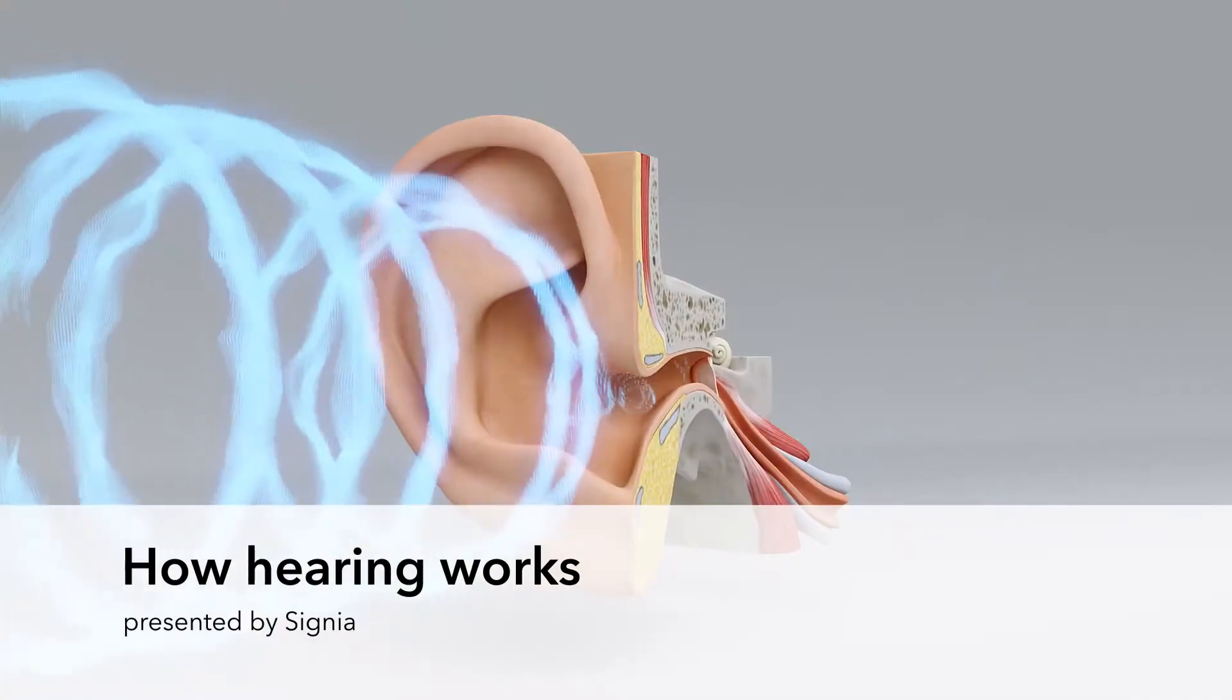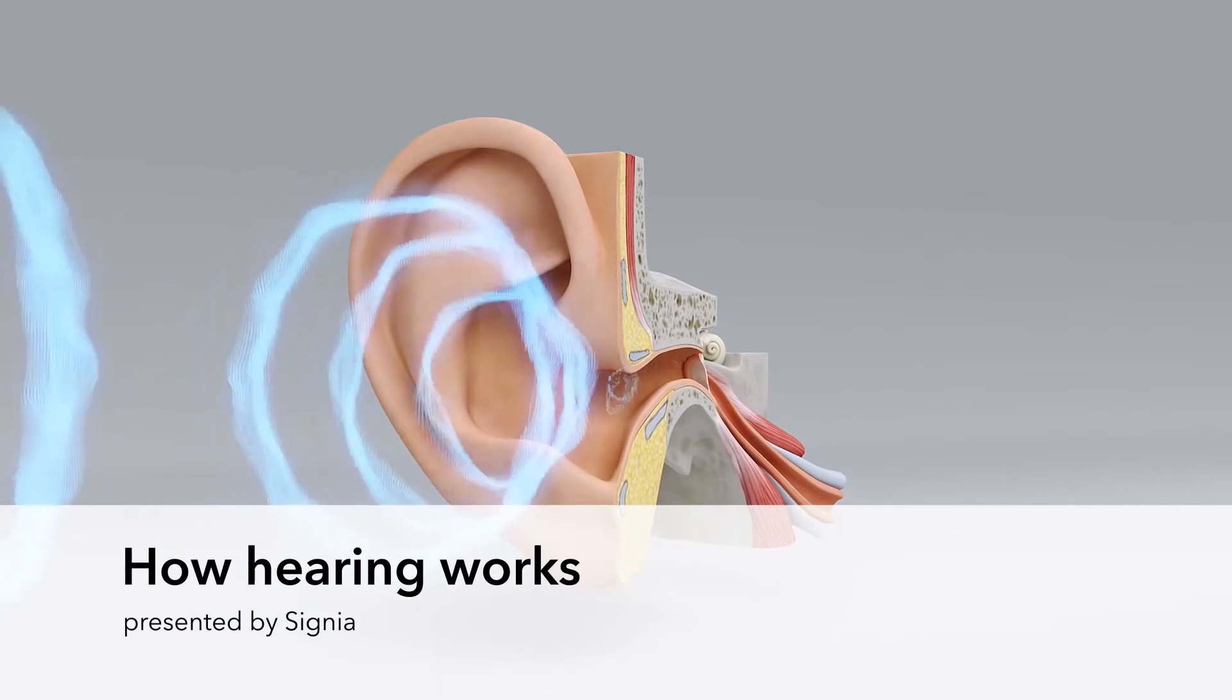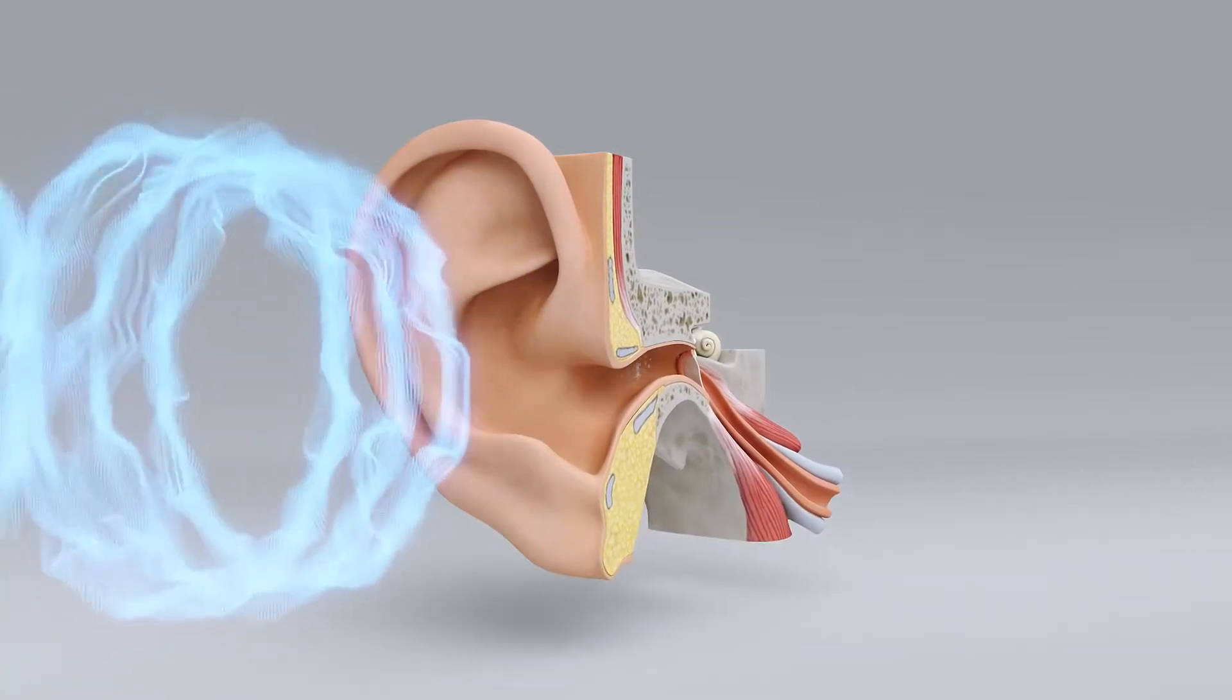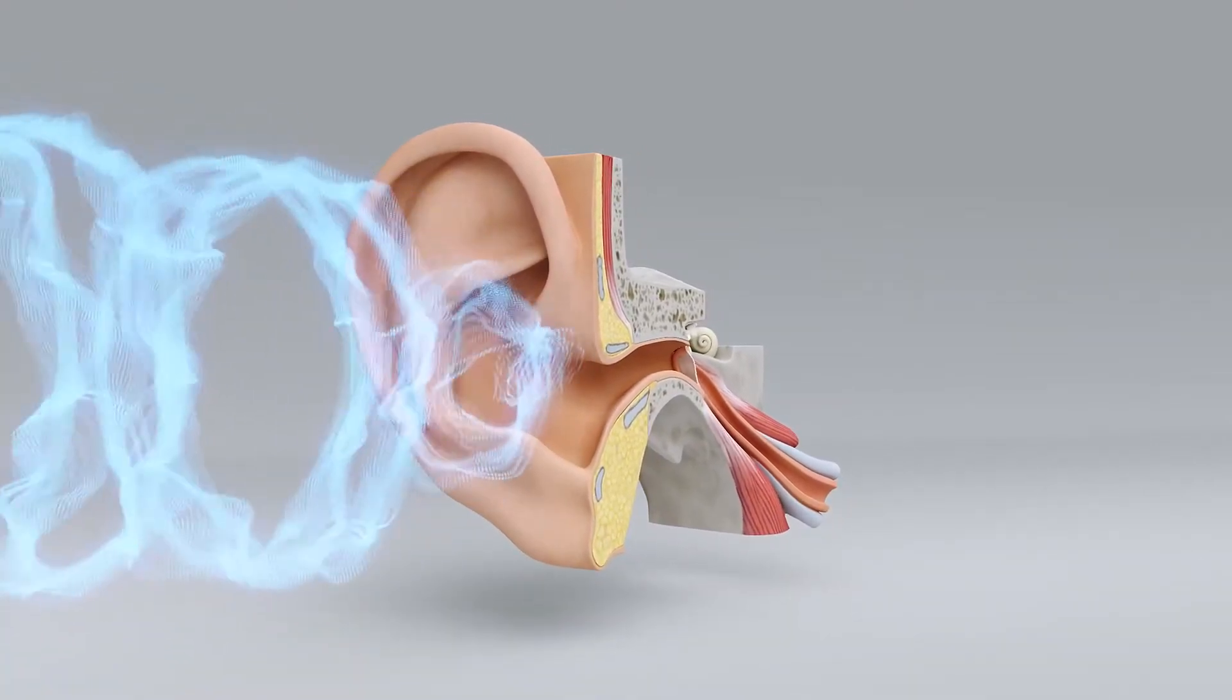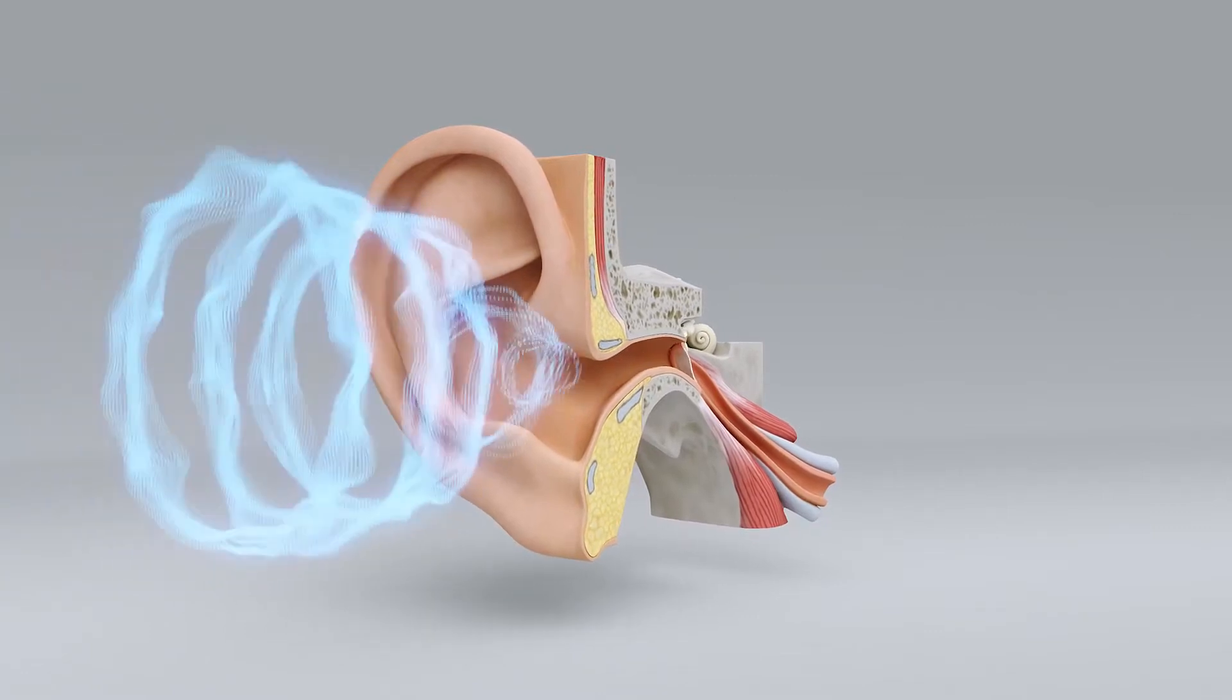Sounds are collected by the outer ear, which consists of the auricle and the external auditory canal. The sound is guided through the ear canal to the middle ear.